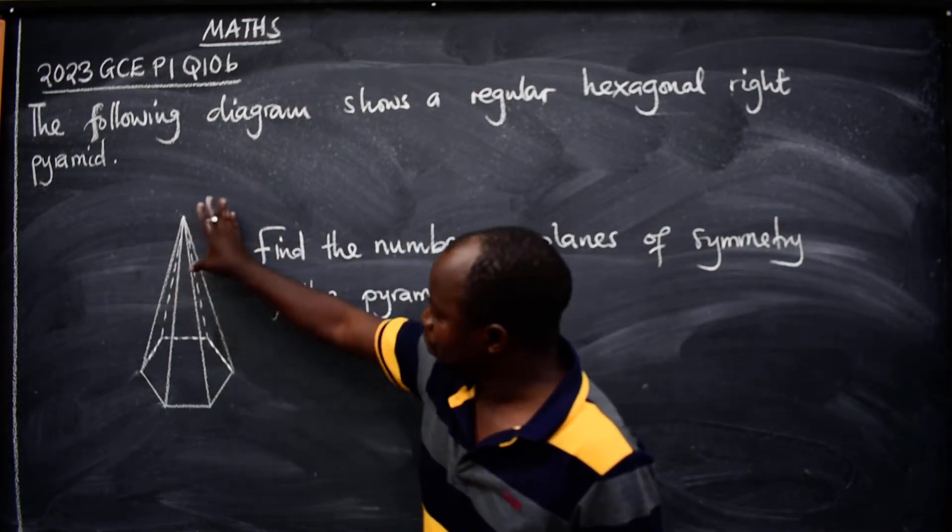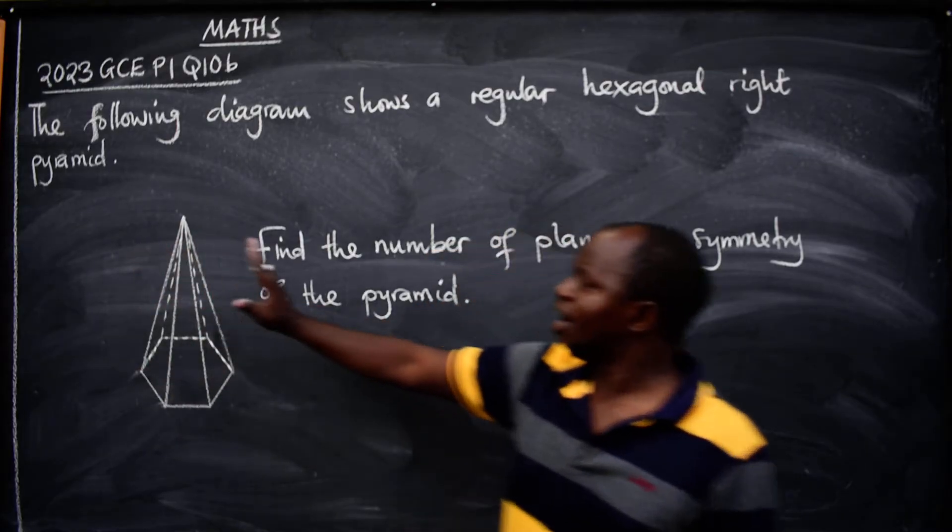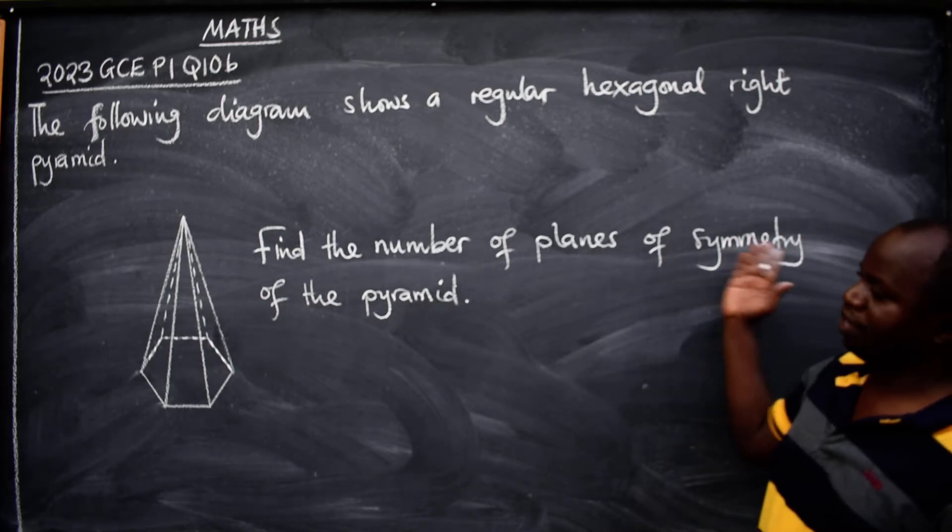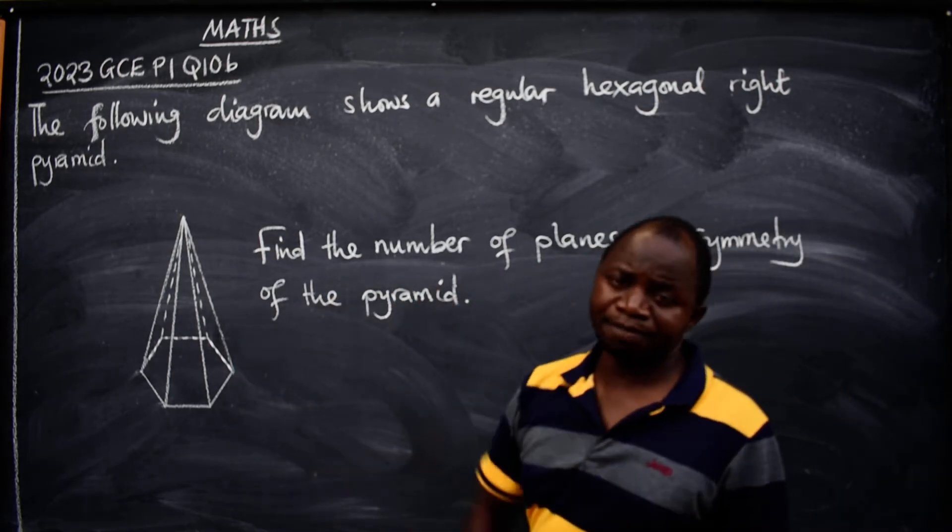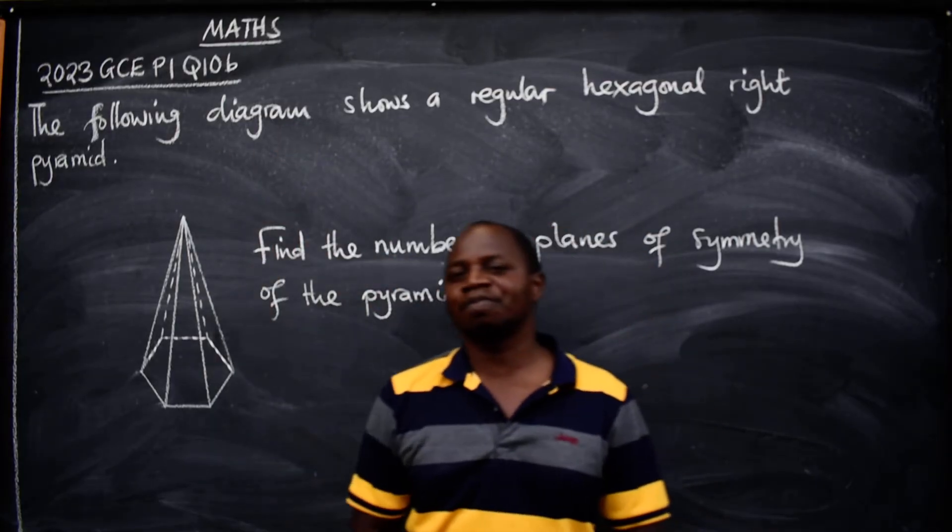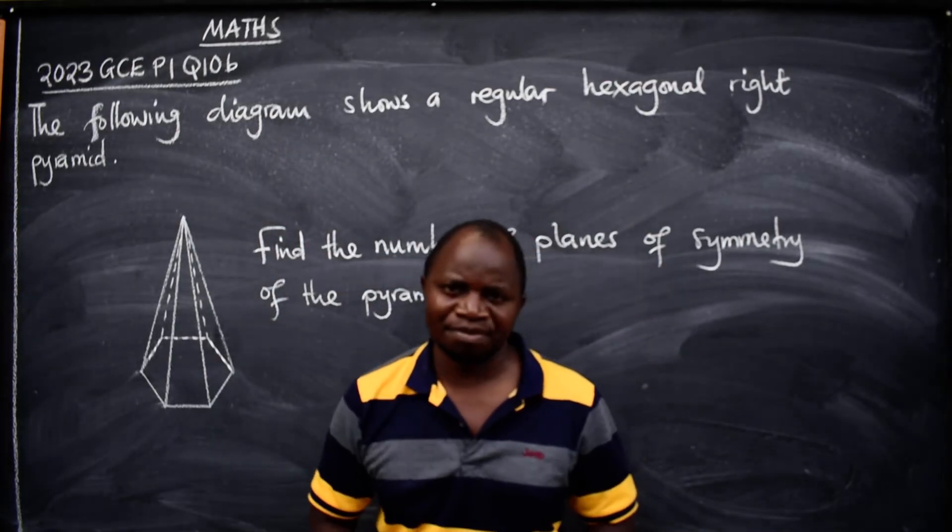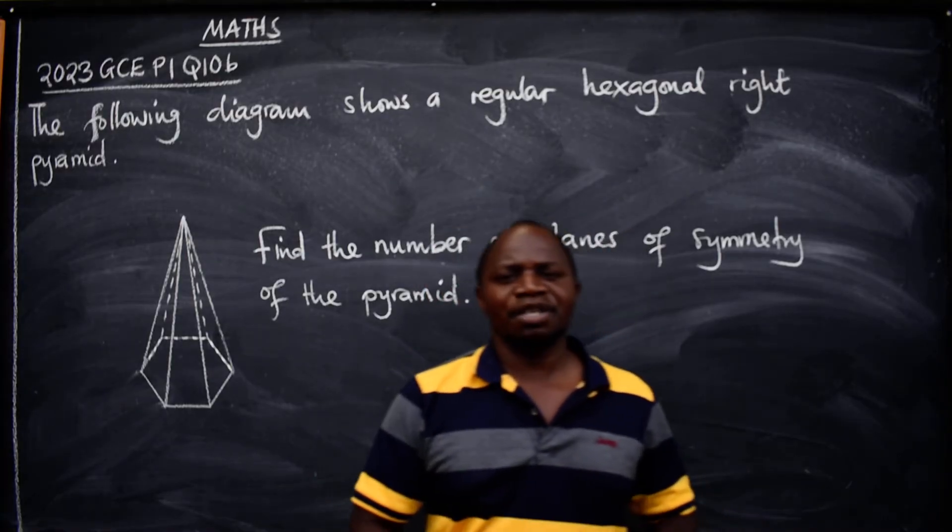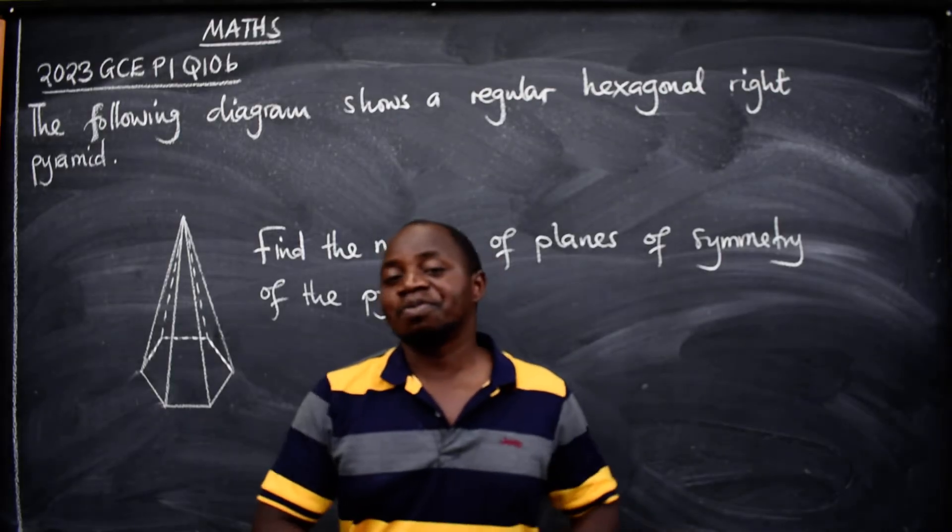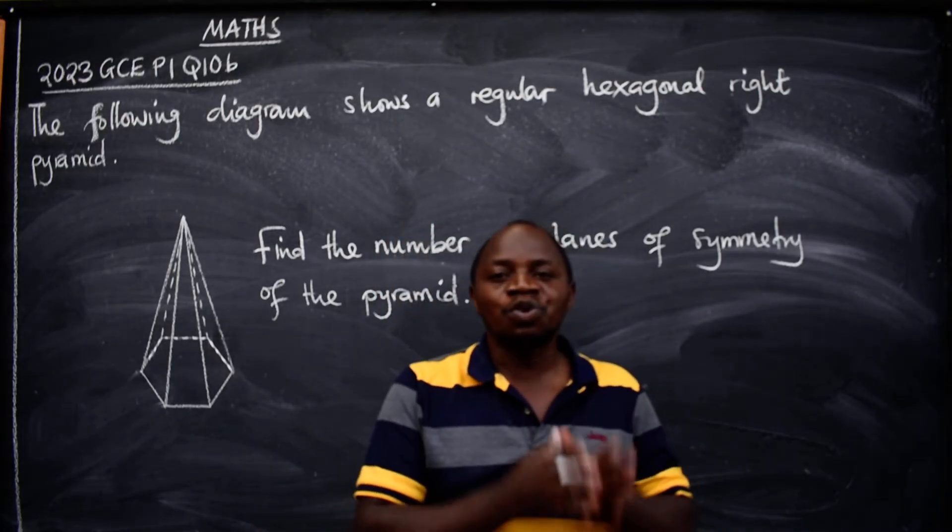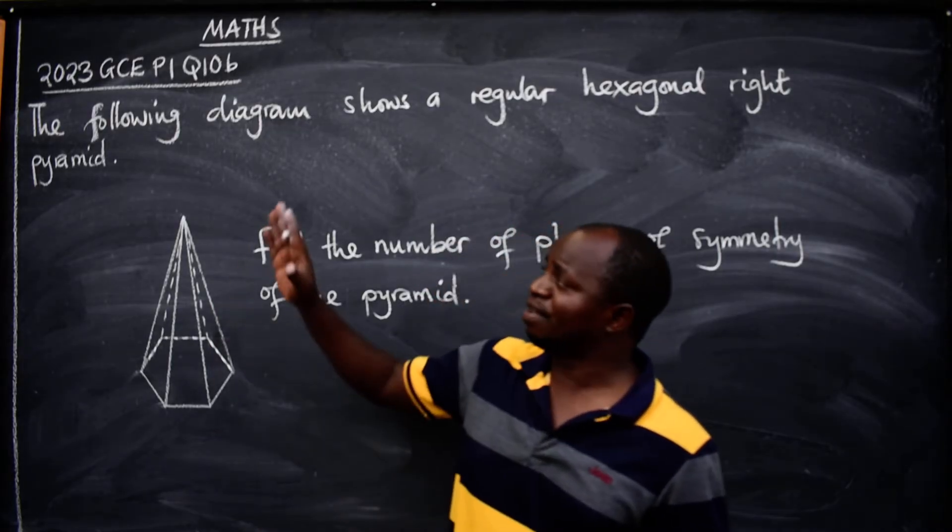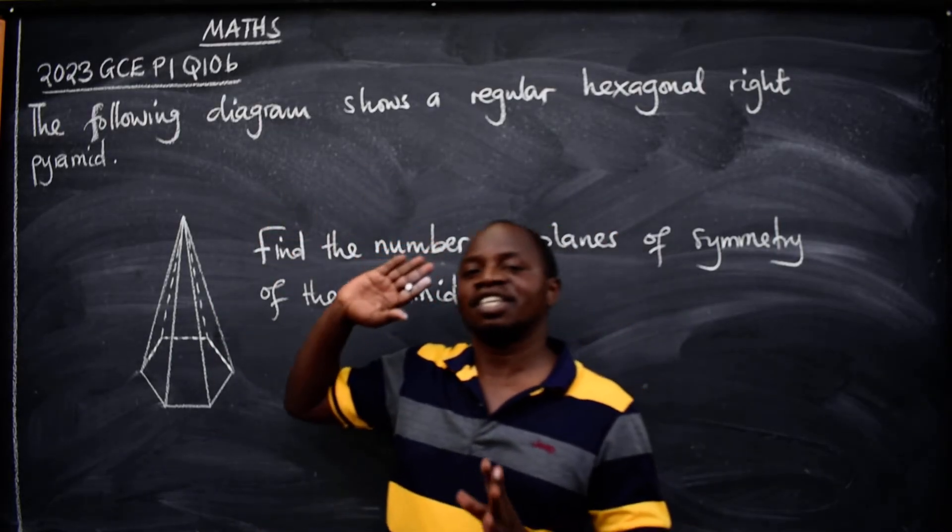Okay, so this is the pyramid that you're seeing here. Now the question is: find the number of planes of symmetry of the pyramid. You have to understand that the question is coming from a topic called symmetry. By definition, symmetry is the property of an object to be divided into two equal or identical halves. That is the meaning of the word symmetry.